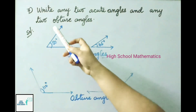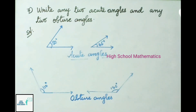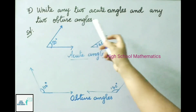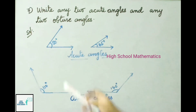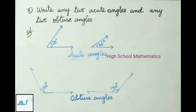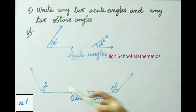Question 7: Write any two acute angles and any two obtuse angles. Two acute angles are 80 degrees and 45 degrees. Two obtuse angles are 110 degrees and 140 degrees.